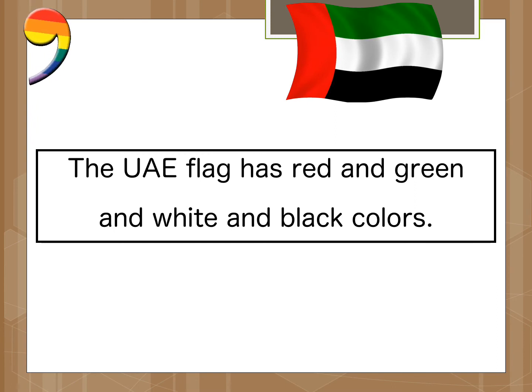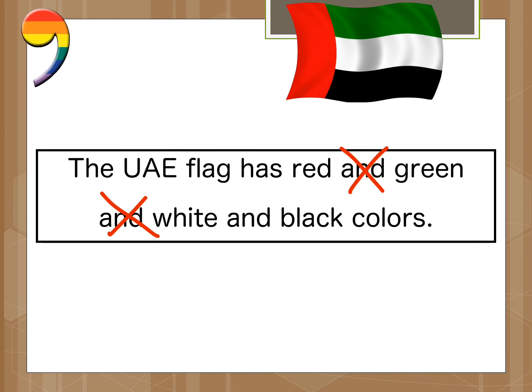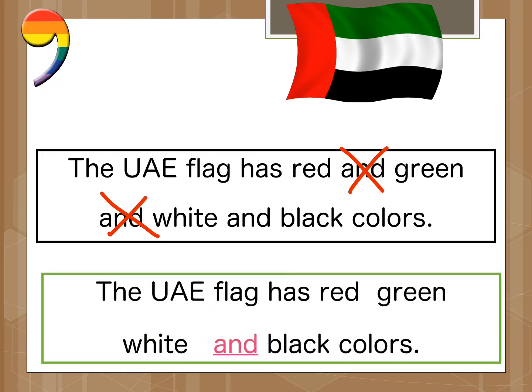Now, listen to this sentence: adding commas will make the meaning more clear and easy to hear. If I keep adding 'and, and, and' after each item, the sentence will not look nice. For example: 'The UAE flag has a red and green and white and black colors.' Now, with commas: 'The UAE flag has a red, green, white, and black colors.' The sentence is easier and better to hear.